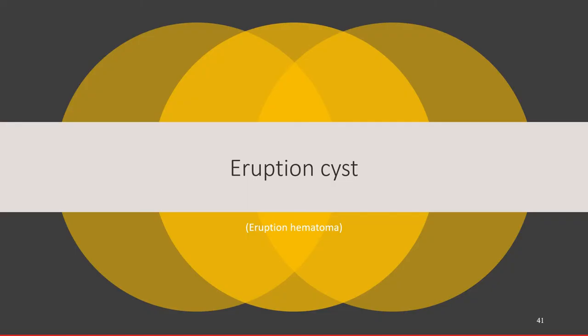We are discussing the cysts originating from reduced enamel epithelium, and in the last lecture we spoke about the dentigerous cyst. The dentigerous cyst is an intraosseous cyst, and the soft tissue counterpart of the dentigerous cyst is called the eruption cyst.